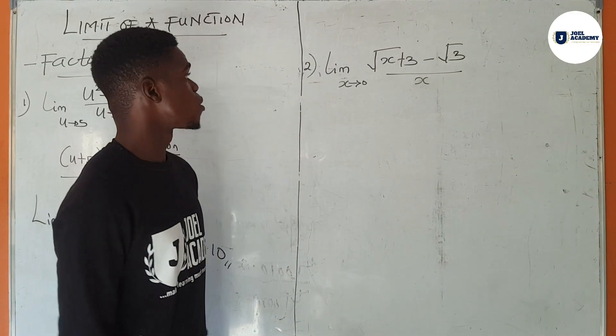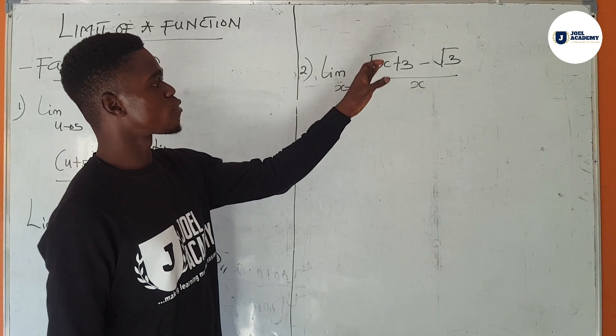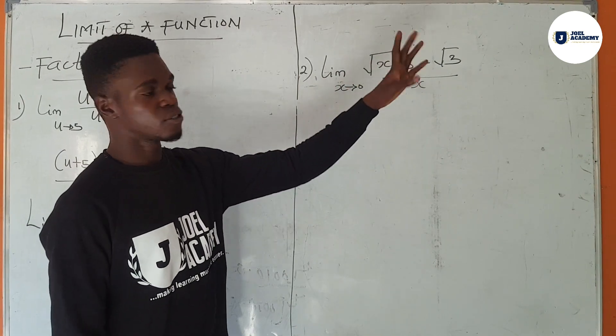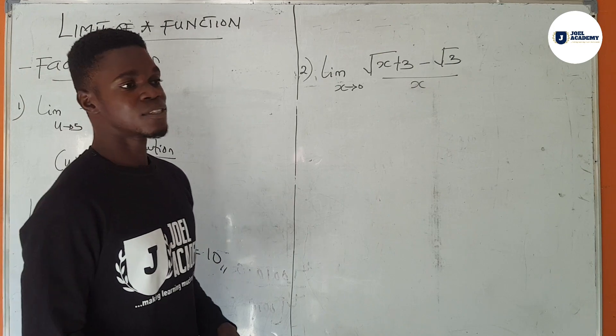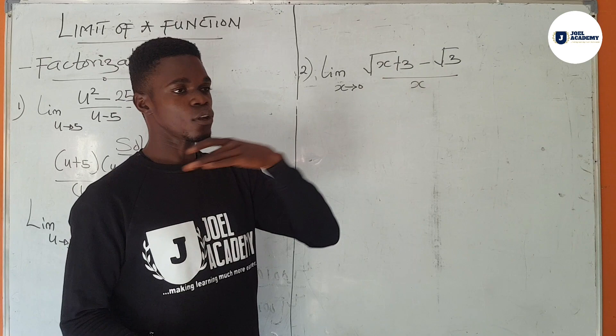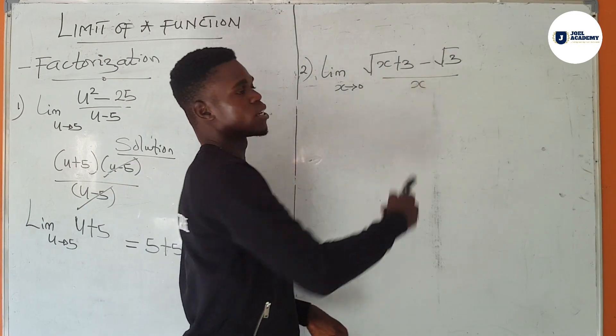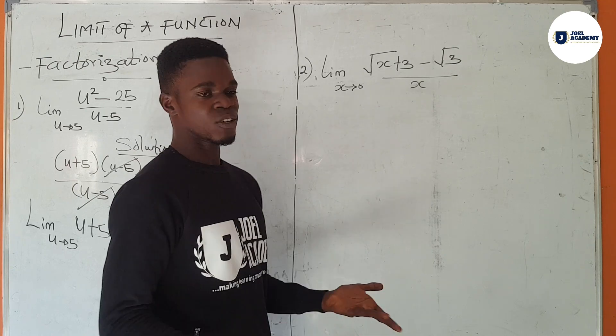We are finding the limit as x tends to 0 of the square root of x plus 3 minus the square root of 3 over x. Just like the previous question we just solved, if you directly put in 0, the answer would be undefined. By the time you replace your x here with 0, the answer becomes undefined.